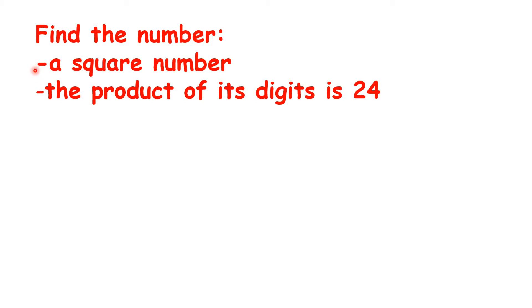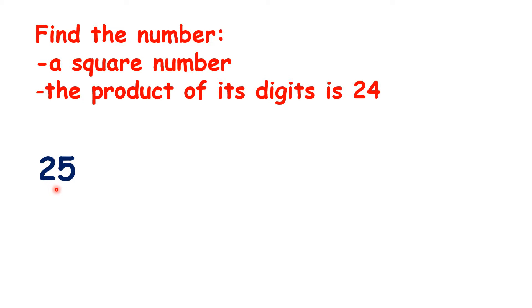It must be at least a two-digit number if you can find the product of its digits, so it won't be the square numbers one, four, or nine. The next square number is sixteen, but one times six is six, not twenty-four. So five times five is twenty-five, that's our next square number, but two times five isn't twenty-four. Thirty-six is our next square number, but three times six is eighteen.